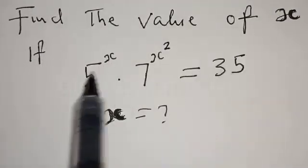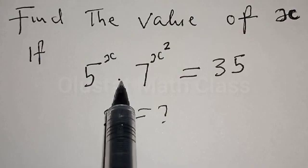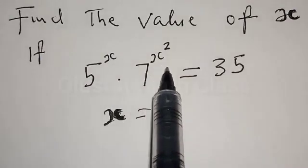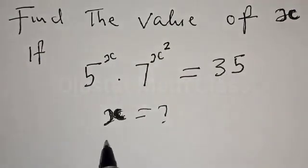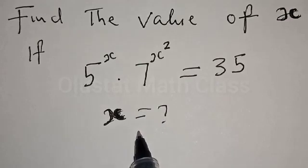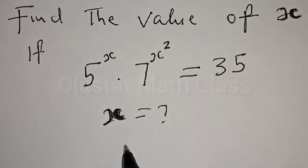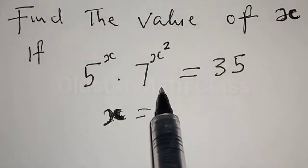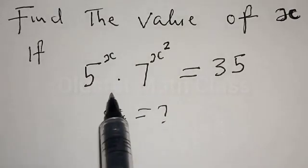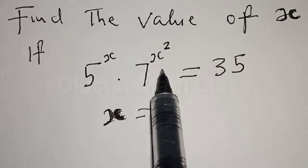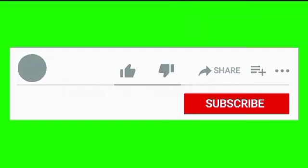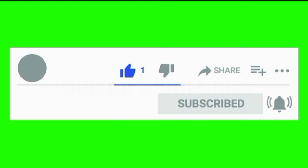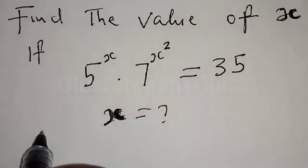Find the value of x if 5 raised to power x multiplied by 7 raised to power x squared is equal to 35. Hi everyone, welcome to my class. In today's class we want to look at how to find the value of x from this given exponential equation. Before we proceed, please don't forget to like, share, comment and subscribe. Subscription is free, thank you.